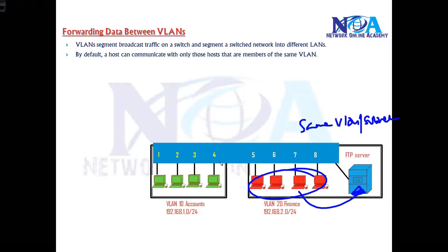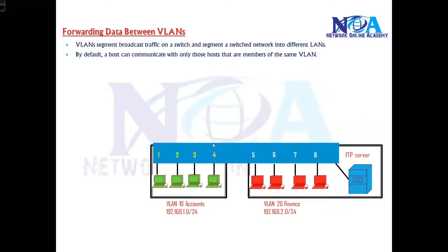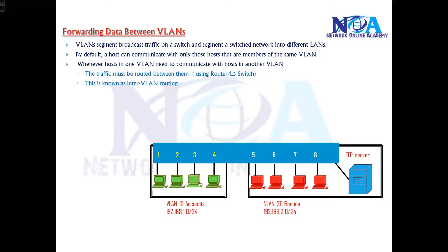But by default, the users of the Accounts department will not be able to access the Finance FTP server. Why? Because they are in different VLANs as well as in different subnets. Now you may want to send some traffic — maybe all of it, maybe specific traffic, depending on requirements. So whenever you have a requirement to forward traffic from one VLAN to another VLAN, we need to do inter-VLAN routing.